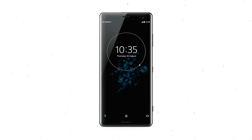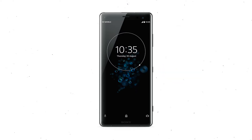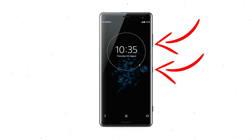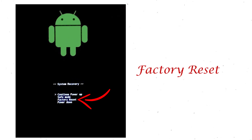Power off your mobile by holding the power button. Press and hold the volume down button and power button. When you see the recovery mode screen, release all the buttons. Select factory reset using the volume buttons and confirm with the power button.